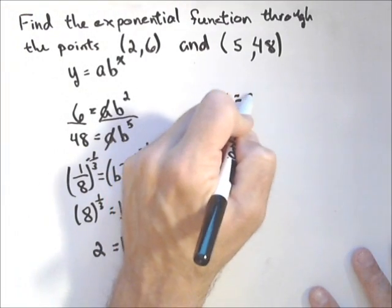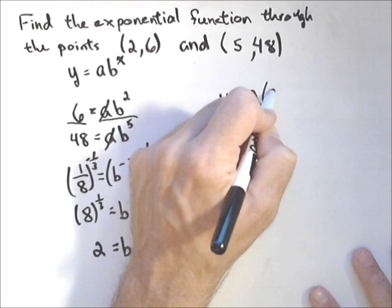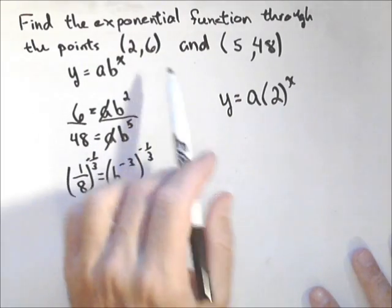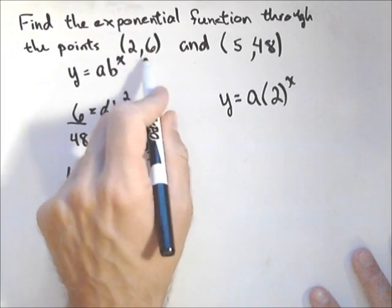So, let's see what we have for a model now. We have y equals a times 2 to the x. So, we still need to find our y-intercept, basically our initial value. Now, with linear functions, we find our slope, then we plug in a point to get our y-intercept. Nothing different here. We're going to plug in either one of our points for x and y.